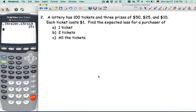And here, it's a lottery. So a lottery has 100 tickets and 3 prizes. First prize gets 50, second prize 25, third prize 10. But each ticket costs $1. So find the expected loss for a purchaser of 1 ticket. All the tickets is quite simple. But 1 ticket takes a little bit more work. You see that we have 1 ticket, 2 tickets, or all the tickets. And there are 100 tickets.